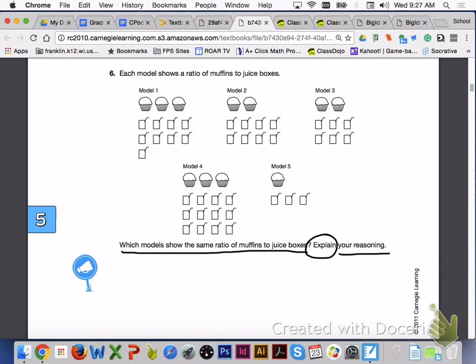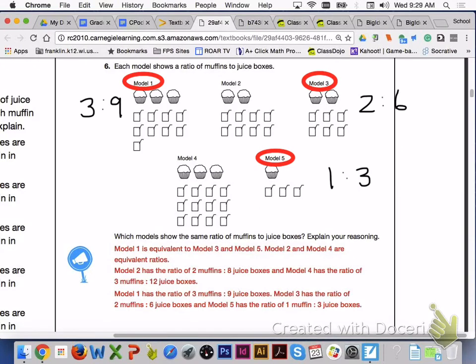Turn to page 312 and answer number 6 with your group members. Model 1, Model 3, and Model 5 are all equivalent because Model 1 has a ratio of 3 to 9, Model 3 has a ratio of 2 to 6, and Model 5 has a ratio of 1 to 3, which are all equivalent ratios.